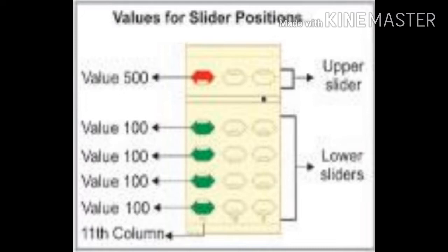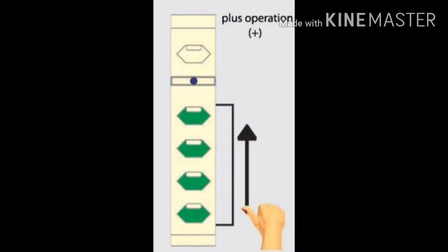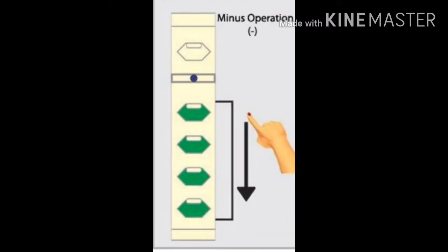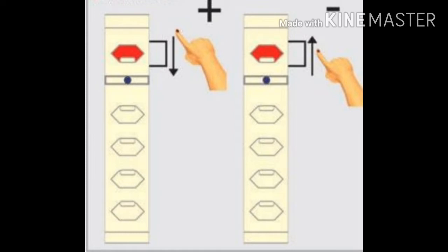Now let's start. For doing a plus operation we have to put the beads up. For minus operation you have to put the beads down. One important thing: as the bead touches the bar it attains a value. For the plus operation the upper bead has to go down, and for minus operation the upper bead has to go up.